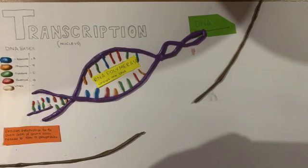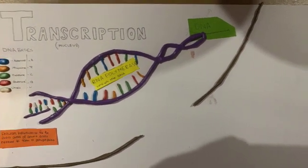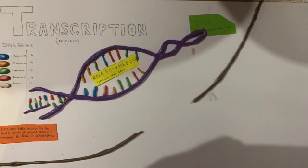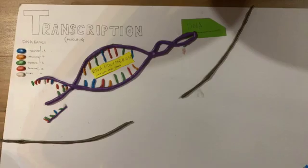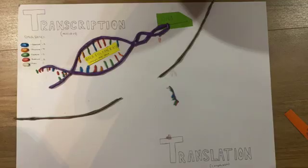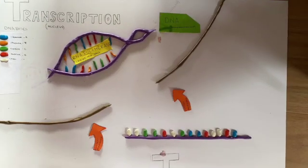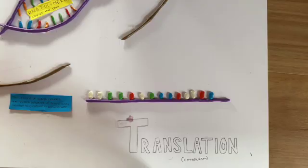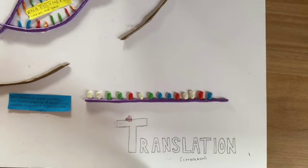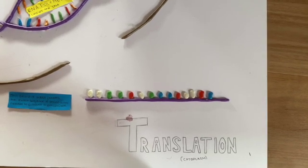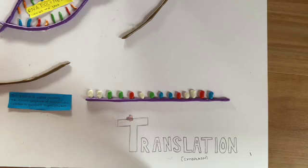mRNA provides information for the exact order of amino acids needed to create a polypeptide. Once the strand of RNA is formed, it then travels from the nucleus, through the nuclear membrane where transcription occurs, to the cytoplasm where translation occurs.